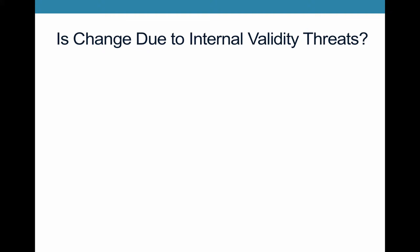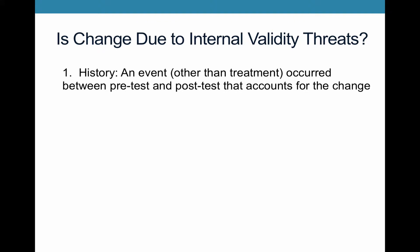So the question with this, when you want to assess real causal processes, is whether there are internal validity threats that are actually at play. Is this change that we observed between 1955 and 1956 really due to an internal validity threat? I'm going to go through four potential threats. First is the history threat. That's that an event other than treatment occurred between the pre-test and the post-test, and that event is what accounts for the change.